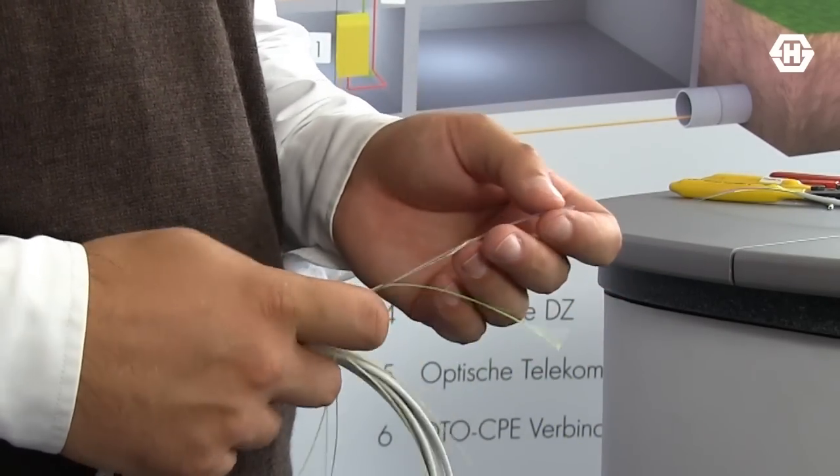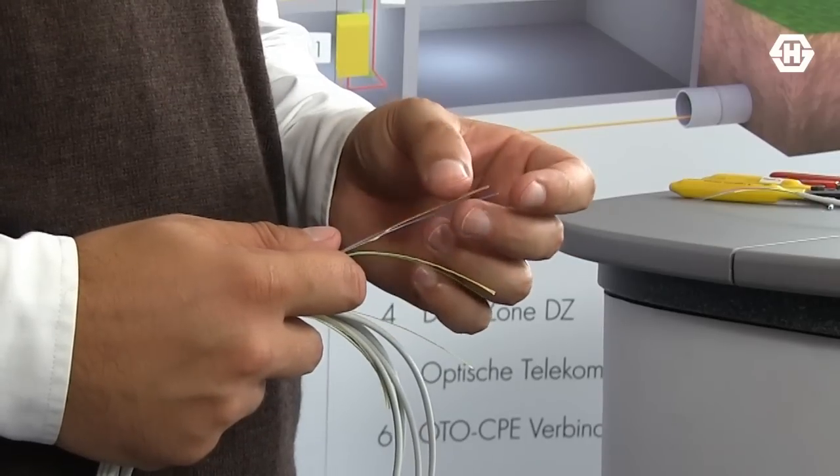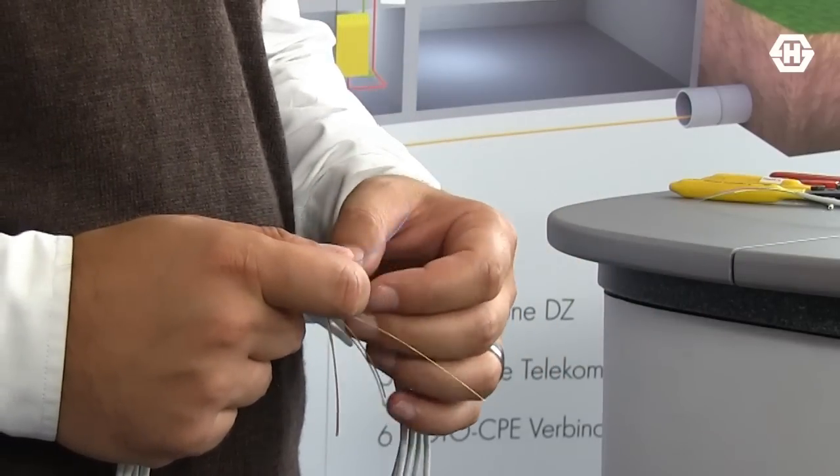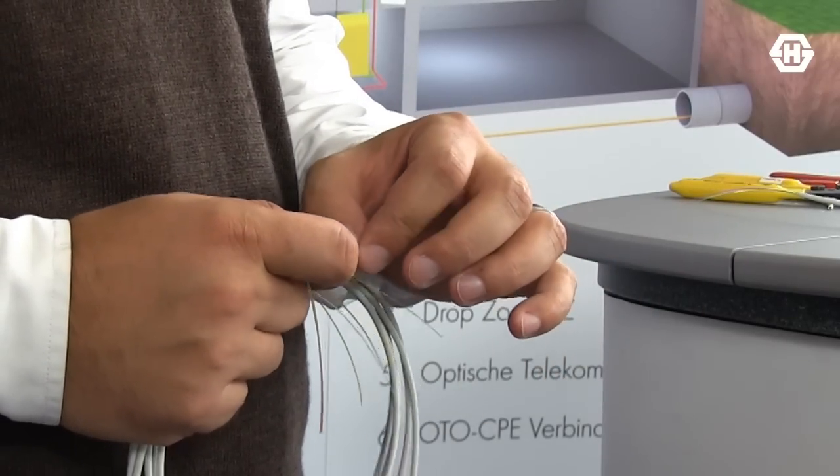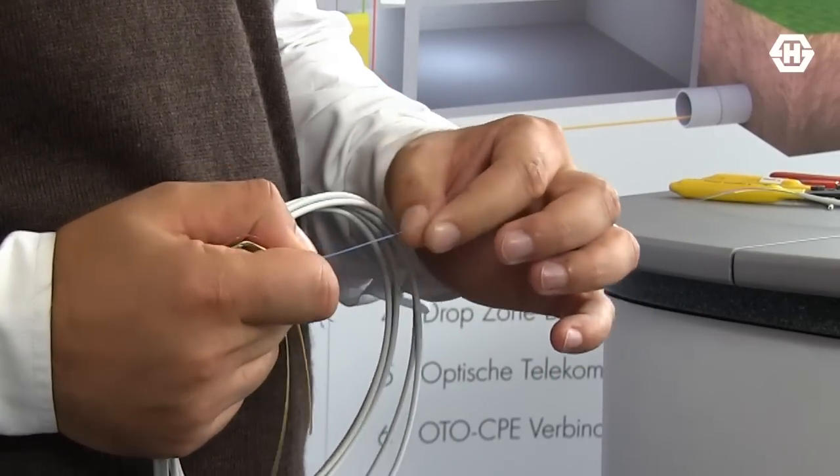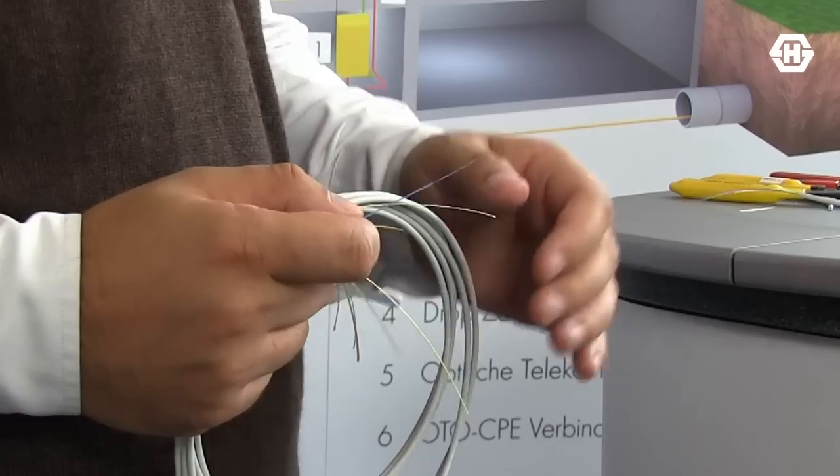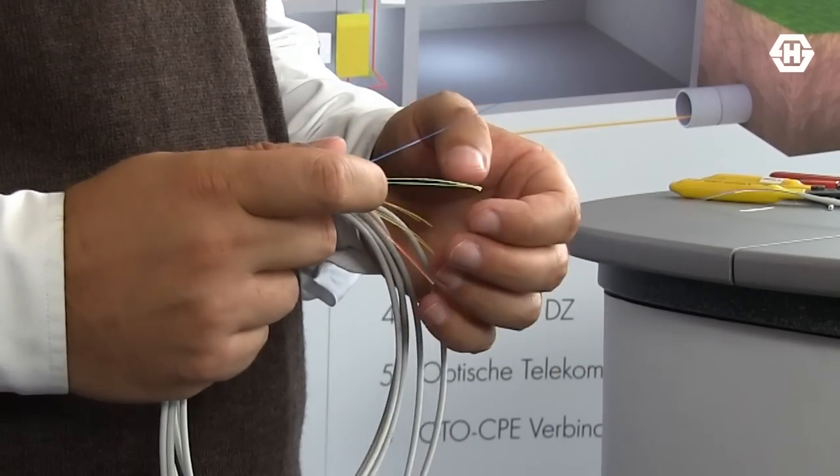And also on the fiber itself, we have the stripping performance that simple that even with your fingernail you can get rid of the protection for splicing.